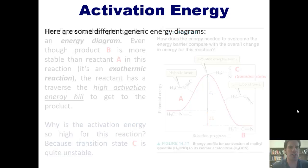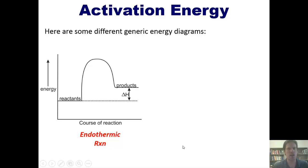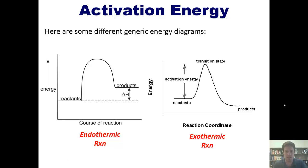I want to show you two different generic energy diagrams. The first is where reactants are at a lower energy than products — this is an endothermic reaction, because products are at a higher delta H level than reactants. The second is an exothermic reaction, because products are at a lower overall level than the reactants. The height of the hill separating the reactants from the peak is its activation energy. Please memorize what these charts look like, because I would totally give you charts like this and ask you to identify which is exothermic and which is endothermic.